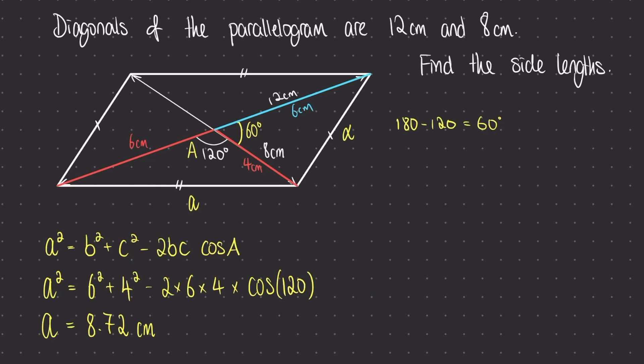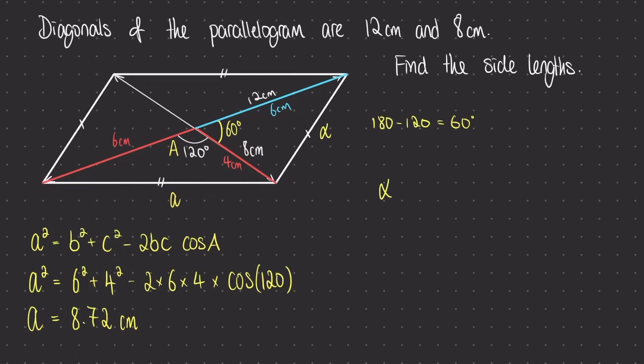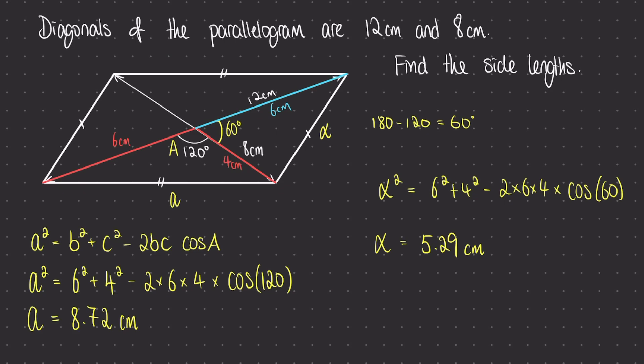Let's now use the second triangle inside the parallelogram to work out the other missing side length. This side is also 6 centimetres — half of the diagonal of 12. The angle in focus this time is 60 degrees. This still sets up the side-angle-side sandwich we require for the cosine rule. I'm going to label the missing side alpha to differentiate it from the first part. So alpha squared equals six squared plus four squared minus two times six times four times cosine of 60 degrees. Working out the right-hand side and square rooting, the value of alpha is 5.29 centimetres to three significant figures. This makes sense since alpha must be smaller than a given the way the parallelogram is set up.